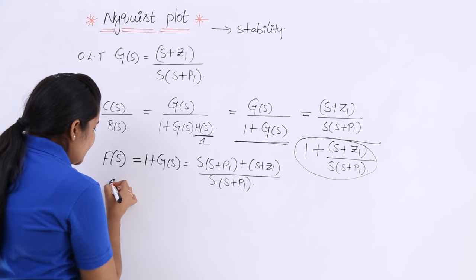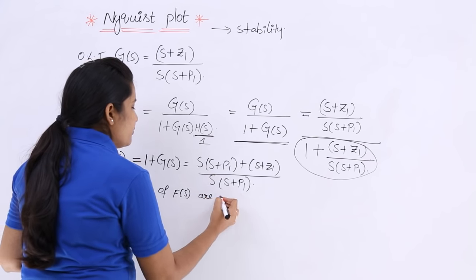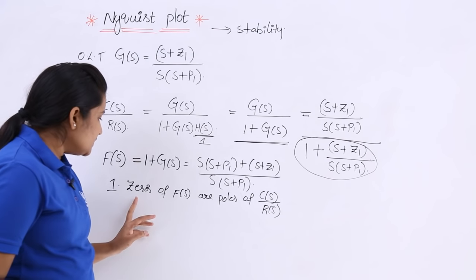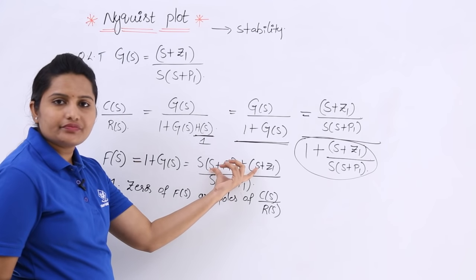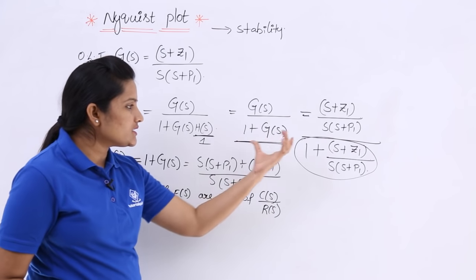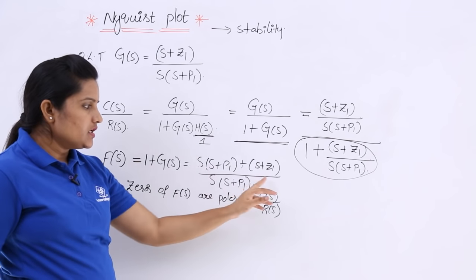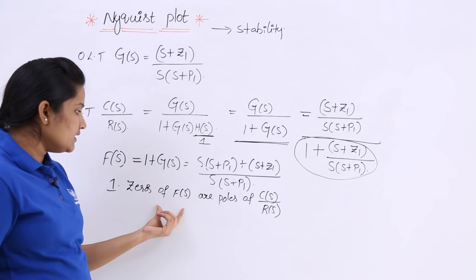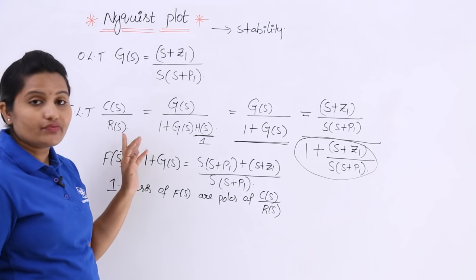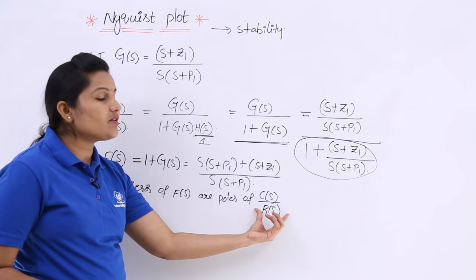The first key point to understand is that the zeros of F(s) are the poles of the closed loop transfer function C(s)/R(s). The zeros of F(s) appear in the denominator of C(s)/R(s), making them poles of the closed loop. So in future, there is no need to calculate C(s)/R(s) for poles — just consider 1 + G(s) and find its zeros.